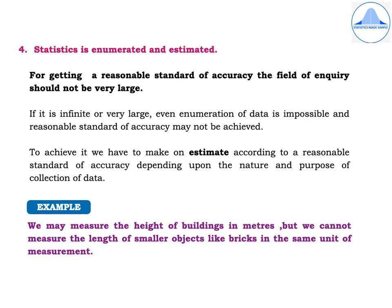Fourth, statistics is enumerated or estimated. For getting a reasonable standard of accuracy, the field of enquiry should not be very large. If it is infinite or very large, enumeration of data is impossible and a reasonable standard of accuracy may not be achieved. To achieve it, we have to make an estimate according to a reasonable standard of accuracy depending upon the nature and purpose of collection of data. For example, we may measure the height of buildings in meters, but we cannot measure smaller objects like bricks in the same unit.